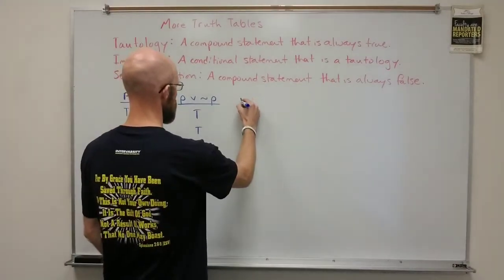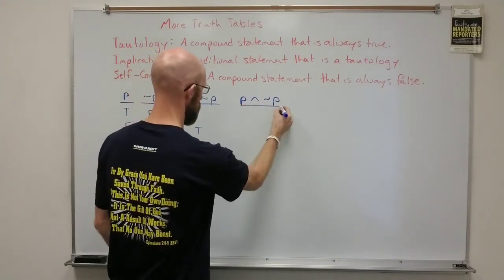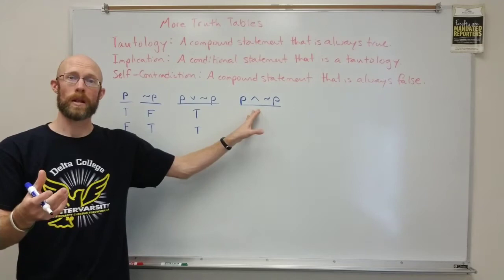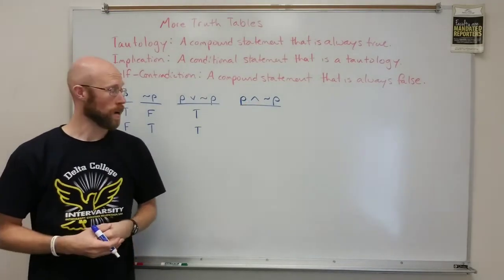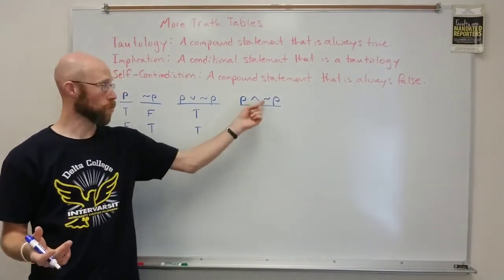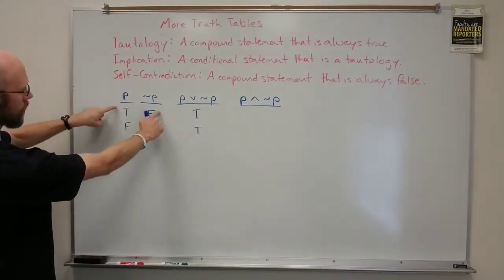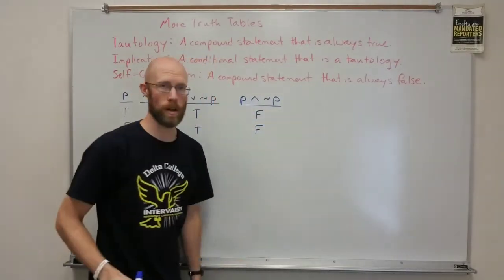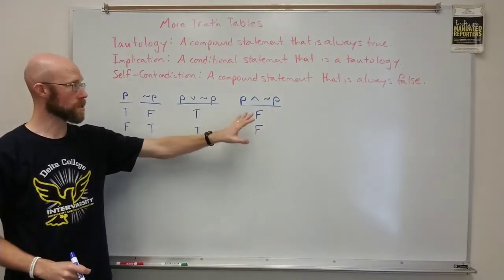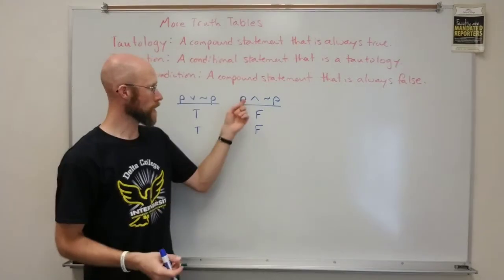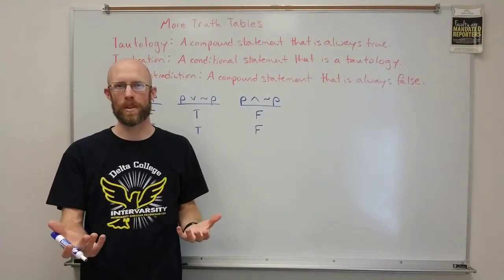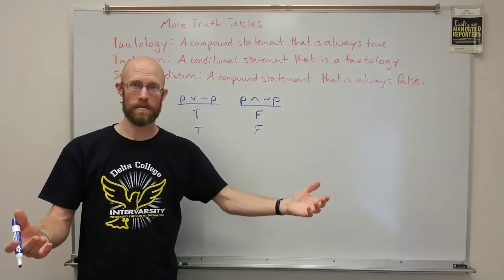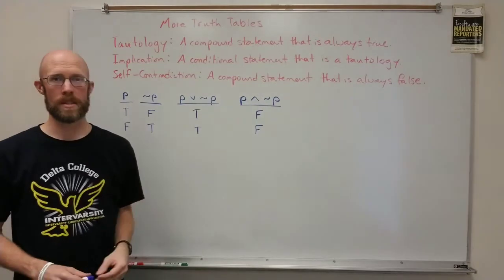In addition to that, we could look at the conjunction of a statement with its own negation. Remember, conjunction is true when both simple statements are true, and false everywhere else — it just takes one of those to be false for the whole thing to be false. Well, notice here there are no cases where they're both true; one is false or the other is false. So this is going to be false everywhere in the column. This is an example of a self-contradiction — that's like saying I am at Delta College and I'm not at Delta College. Being in two places at once would be a self-contradiction.